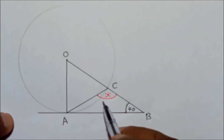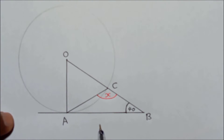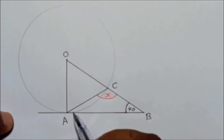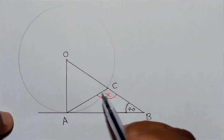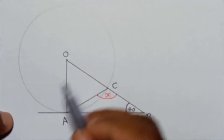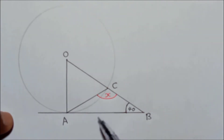Let's try to find the value of x. This angle we need to find. Like I told you earlier, what we have to do is find the other angles which you can find before this. After you mark the other angles which you can find, you will find the method to find this angle.